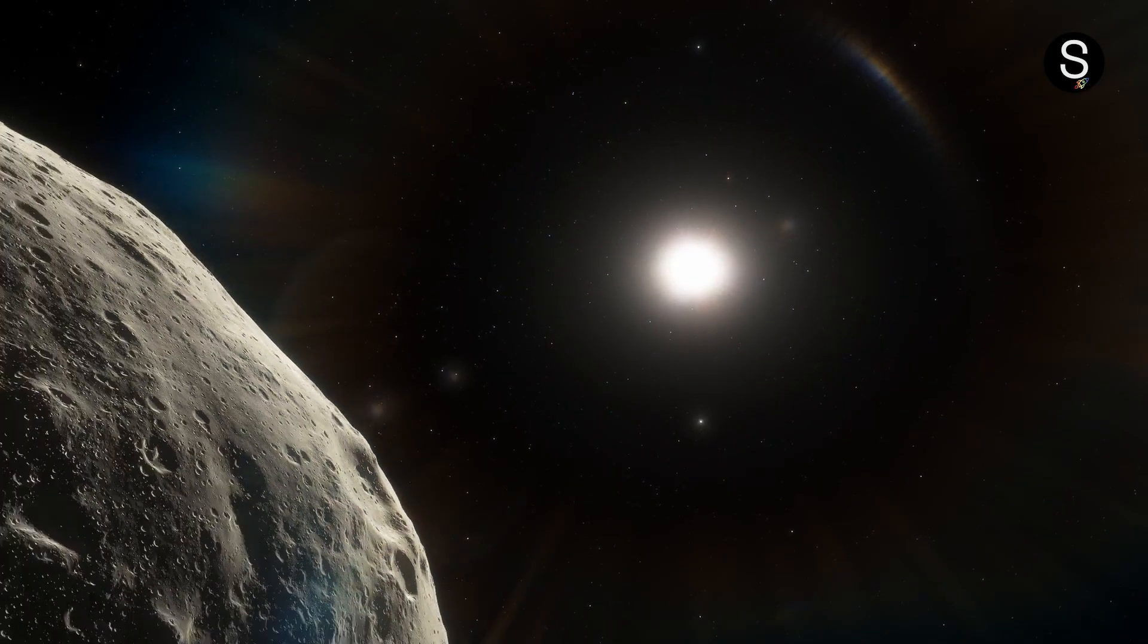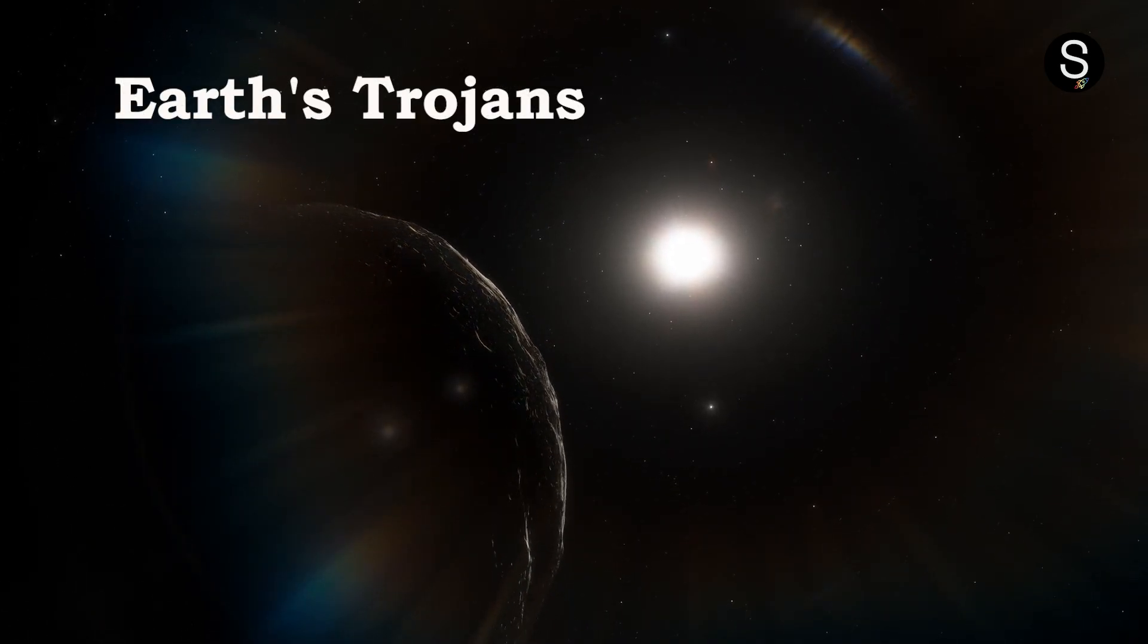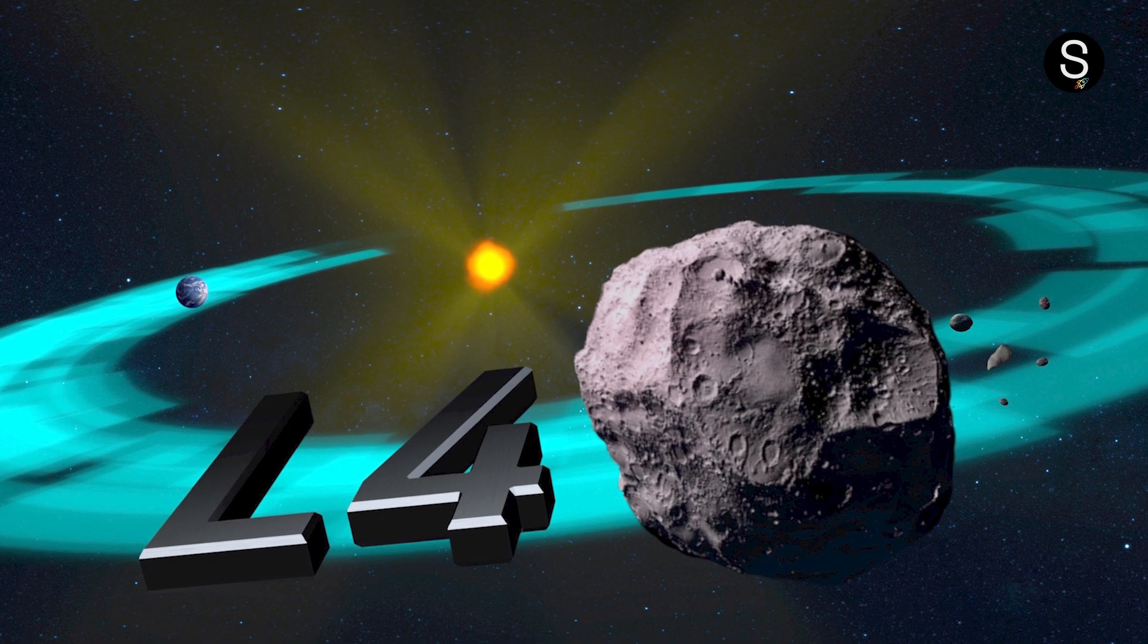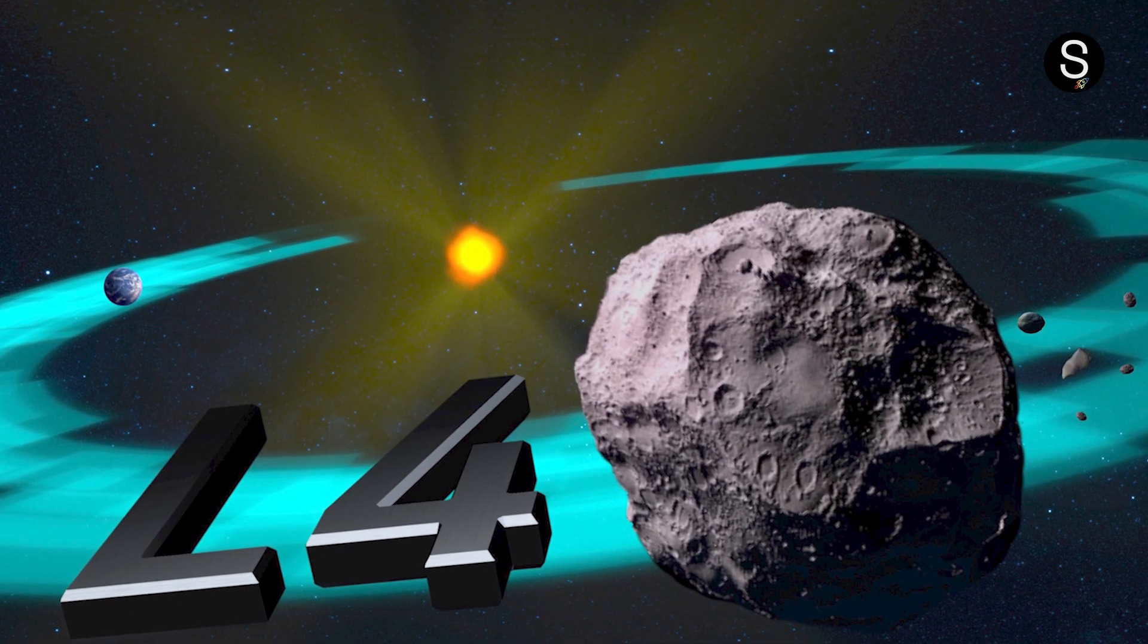Small naturally formed objects, which are referred to as Earth's Trojans, can even be found orbiting within these locations. Ever since their discovery, there have been only two Earth Trojans, both of which have been found within Lagrange point 4.